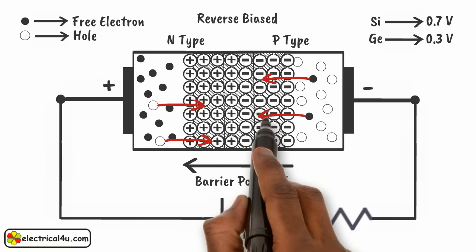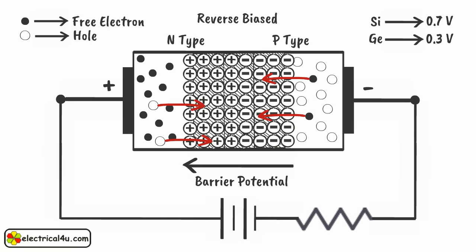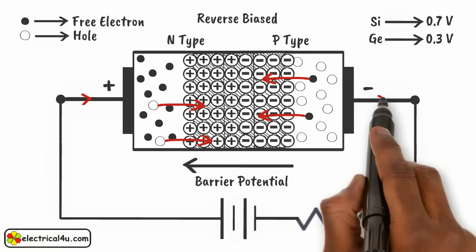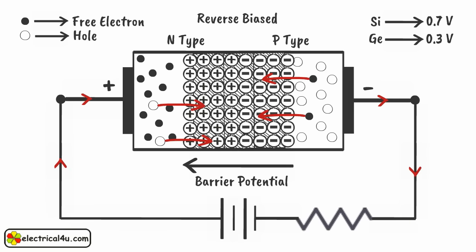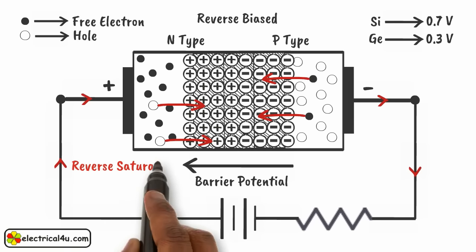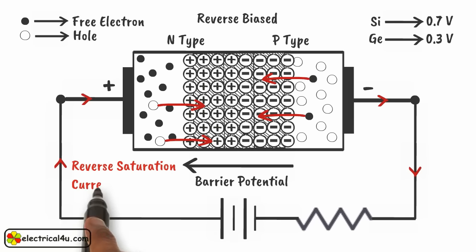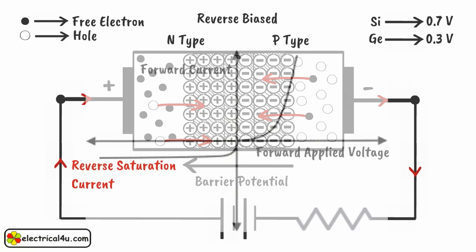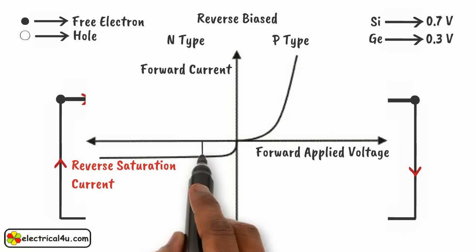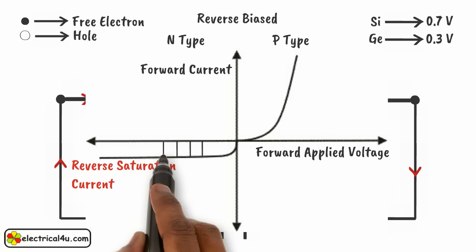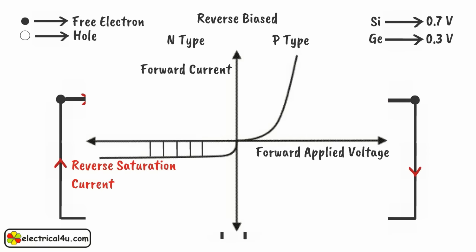The polarity of the reverse bias does not oppose the flow of holes from N-type to P-type region, and free electrons from P-type to N-type region. As the number of minority carriers is very few, a tiny current flows from the N-type end to the P-type end in the diode. This current is called reverse saturation current. If we ignore this tiny current, we can say there will be no current flowing through the diode in reverse biased condition.